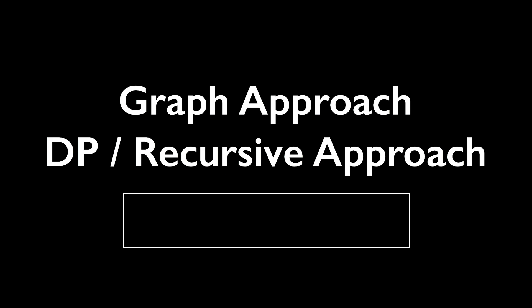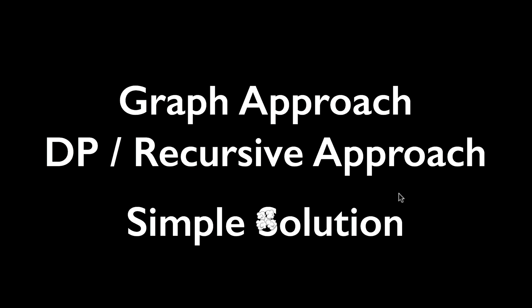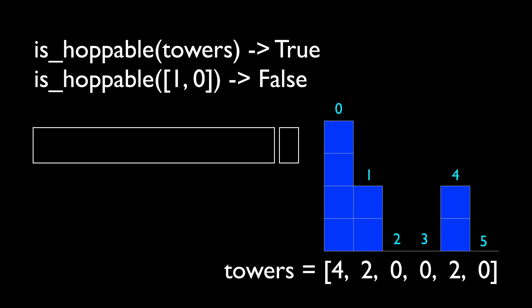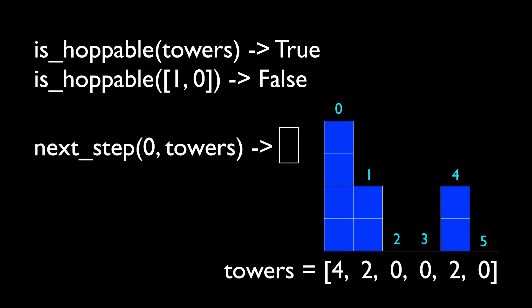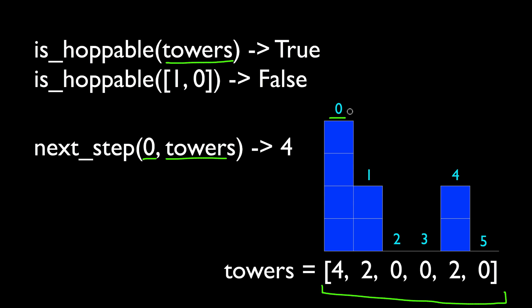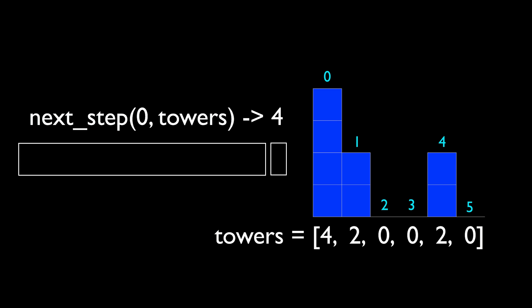Both the graph approach and the dynamic programming approach work, but my favorite solution is neither of these — I'll call it the simple approach. We write a function called next_step, which takes two arguments: the current position you're standing on, and the towers array. It returns the next optimal step given the current position. For example, next_step(0, towers) should return 4 because the optimal next step is index 4. That result becomes the new current position, and we feed it back into next_step to find the next optimal step.